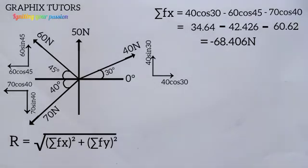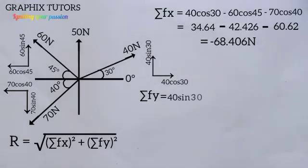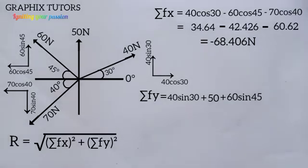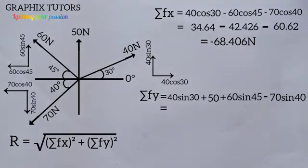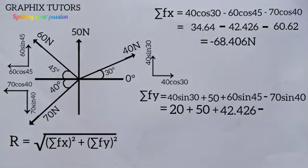Next we find ΣFy — the sum of all vertical components. The 40 sin 30 faces upward, so it is positive: 20. The 50 N north also faces upward: +50. The 60 sin 45 faces upward: +42.426. The 70 sin 40 faces downward, so it is negative: −44.995. Adding all together: 20 + 50 + 42.426 − 44.995 = 67.431 N. That is the total net force along the y-axis.